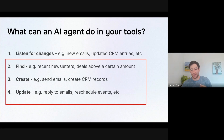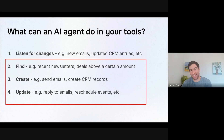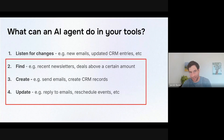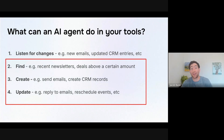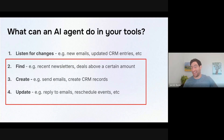The second is creating new stuff — making stuff. This can be sending email, creating new records in your CRM, creating new Google Docs, creating new rows in a spreadsheet, creating entirely new spreadsheets. Much like a human employee makes stuff and does stuff, so too will your AI agent.